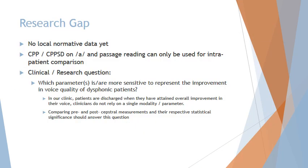So why don't we use it more often? There's a research gap because there's no normative data locally. All these measures, whether on /a/ or passage reading, can mostly only be used for intra-patient pre and post comparison. The research question we had in mind was: which parameter or parameters are more sensitive to represent the improvement in voice quality of our dysphonic patients? In our clinic, patients are discharged when they have attained overall improvement in their voice, so clinicians do not rely on a single modality or parameter. Therefore, comparing pre and post cepstral measurements and their respective statistical significance should answer this question.